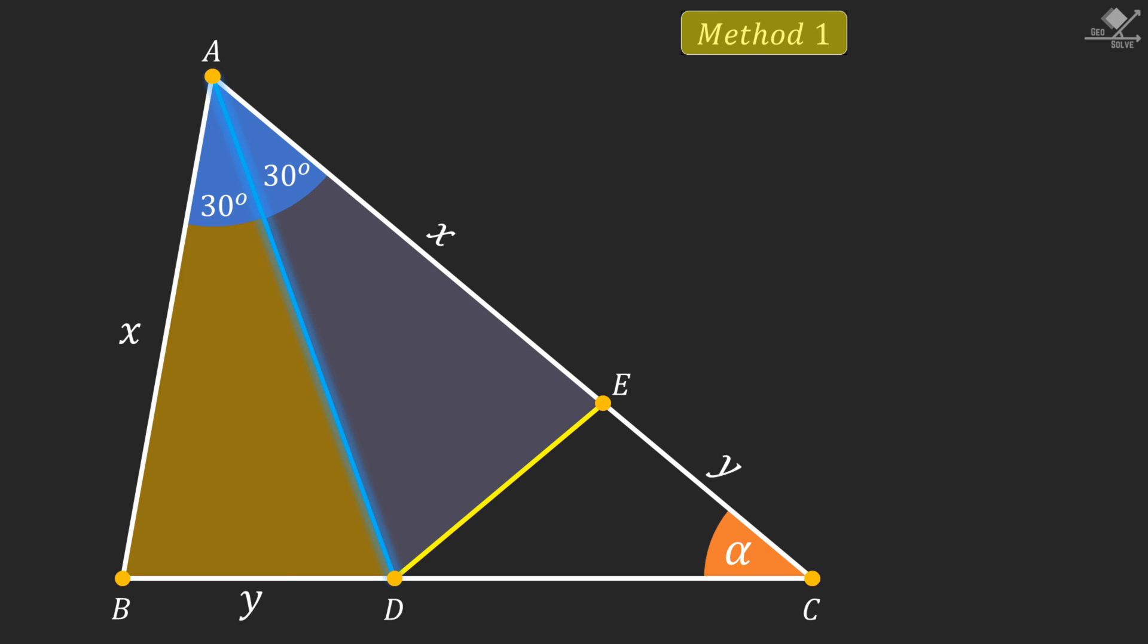We can see that line segment AD is common for both triangles. And both triangles have a side of length X. And the angle between those equal line segments in both triangles are equal. So we can say that these two triangles are congruent by side angle side rule.